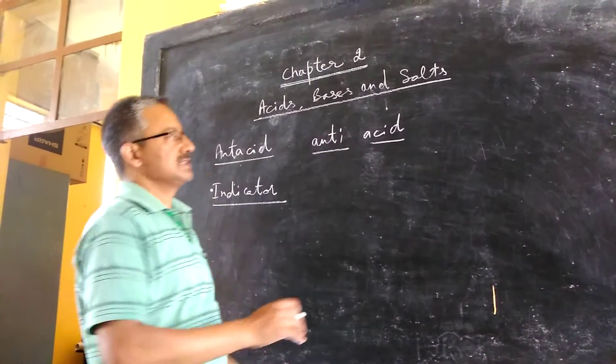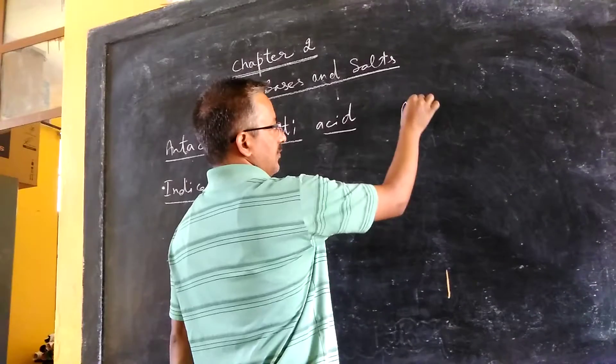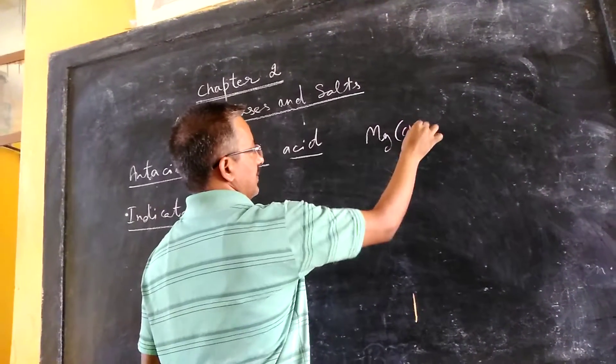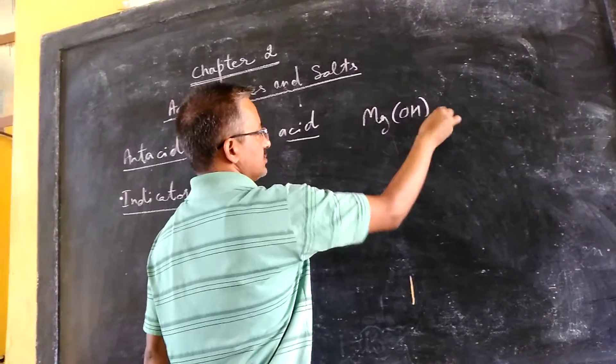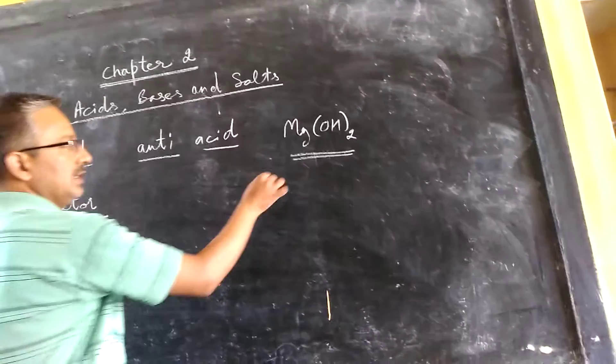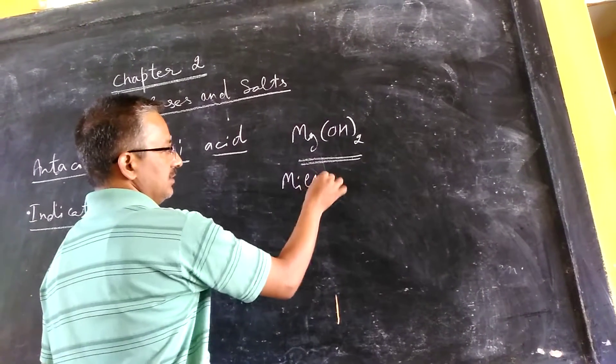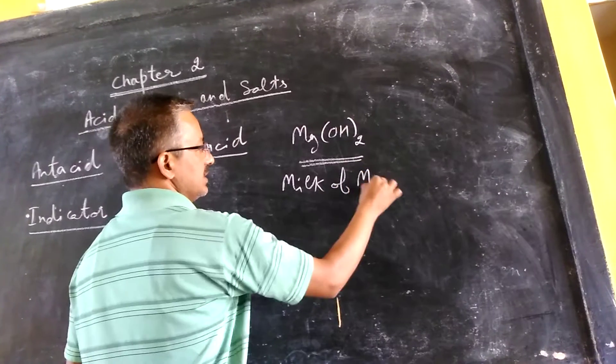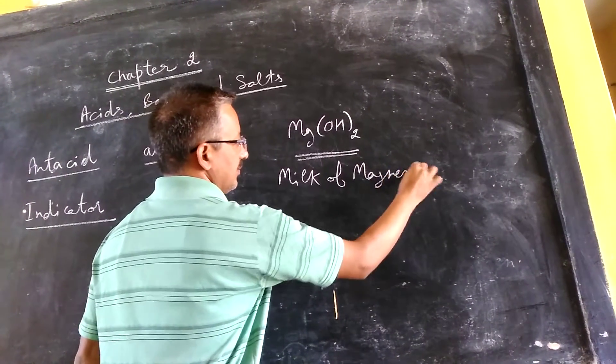A very simple example of antacid is magnesium hydroxide solution. This is also known as Milk of Magnesia.